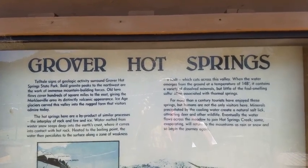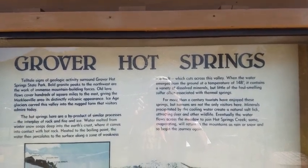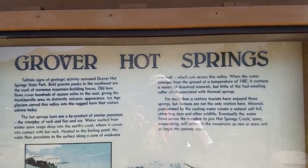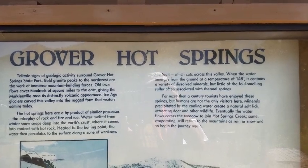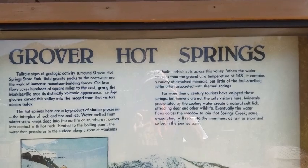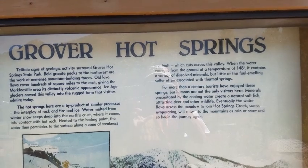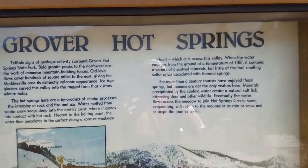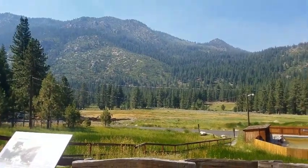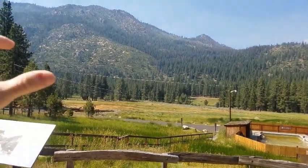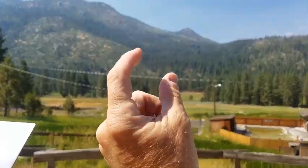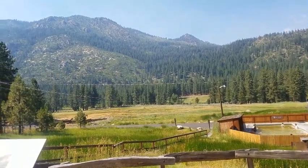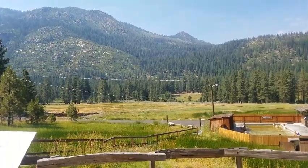Here I am at Grover Hot Springs State Park in California. A hot spring is where water comes to the ground naturally after being heated — either by a nearby volcano or by a fault where two sections of Earth's crust rub back and forth. That friction generates heat. Right at this location there's a significant fault running through here, and all that rock grinding back and forth makes the ground hot, so any water in the ground comes out hot.